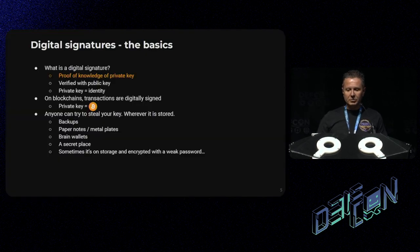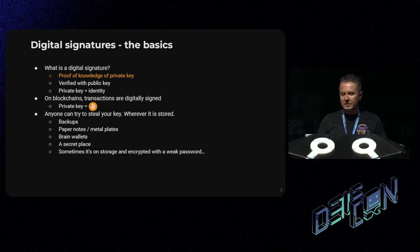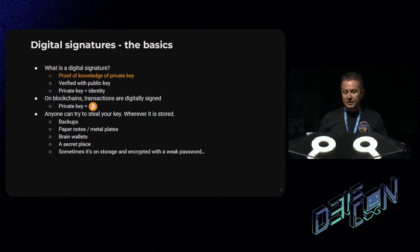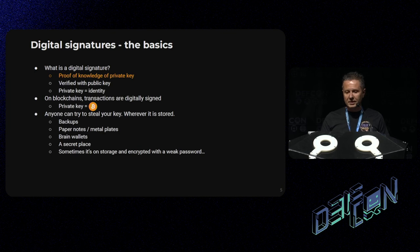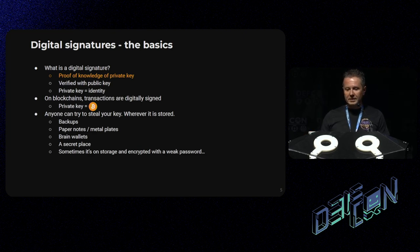Let's head over to the introduction. What is a digital signature? Basically, a digital signature is just a proof of knowledge of a private key. Everyone can verify your signatures with your public key, but only you can generate signatures with the private key. In the real world, your signature on a piece of paper is a proof of identity. In the digital world, the knowledge of your private key is a proof of identity.